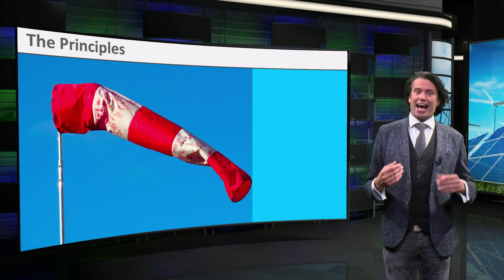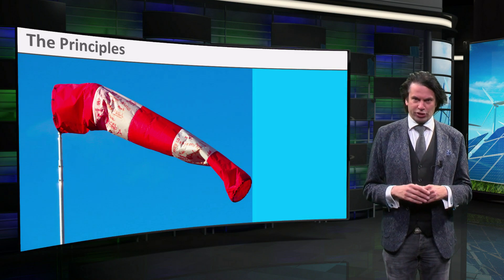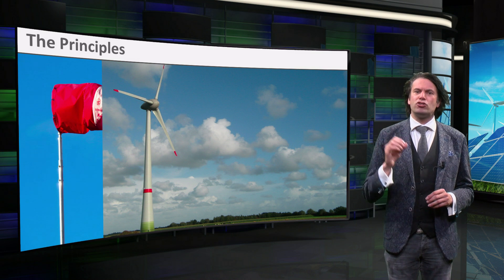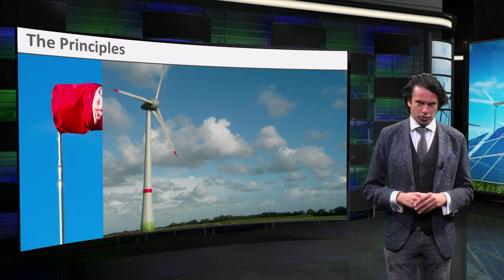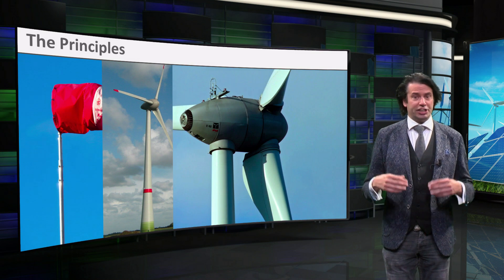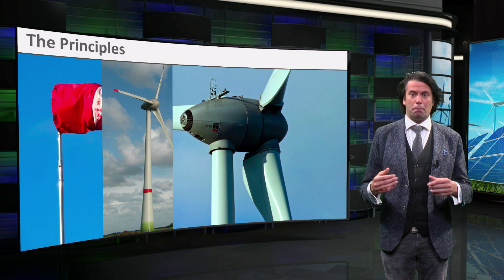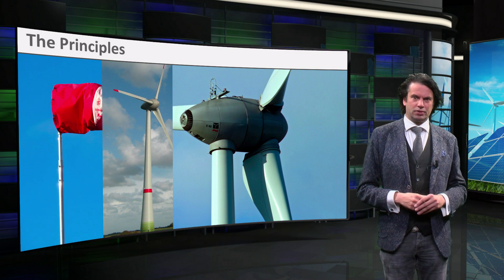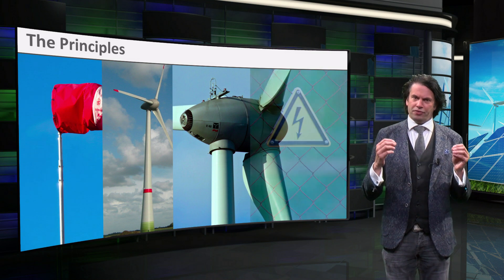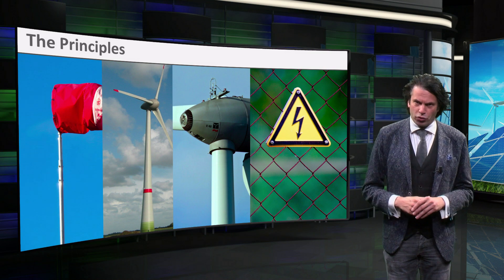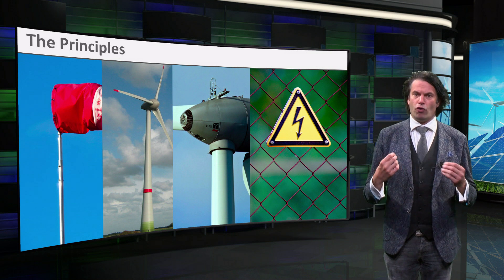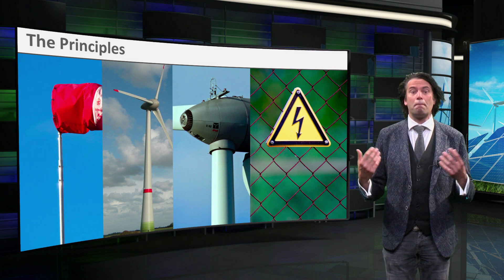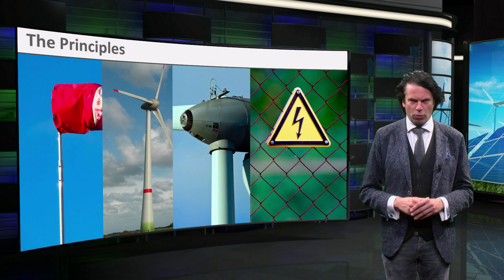The wind carries kinetic energy, which is converted into mechanical energy by means of a wind turbine. Next, a generator converts the mechanical energy into electrical energy. An electronic converter in combination with a transformer links the generator to the grid, ensuring maximum power.